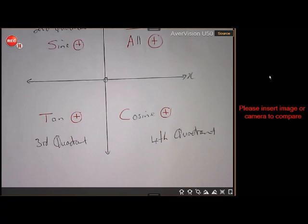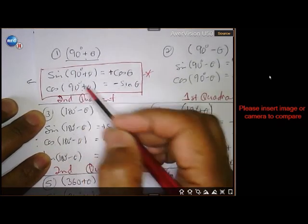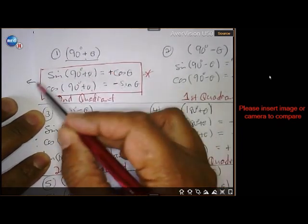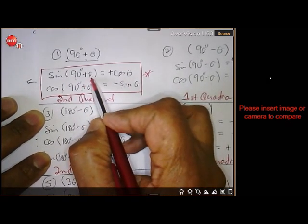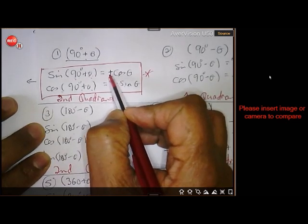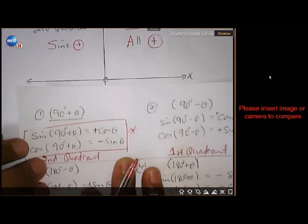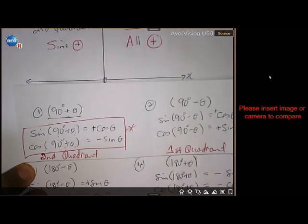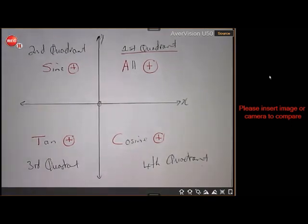There is one exception: the two angles sin(90 + θ) and cos(90 + θ) don't follow that rule. For the second quadrant, cosine should be negative, but cos(90 + θ) is positive. And sine should be positive in the second quadrant, but sin(90 + θ) gives a different result. So these are the only two that behave as exceptions — please make a note of that.